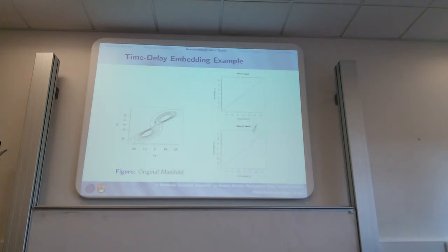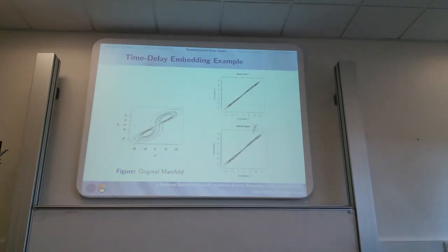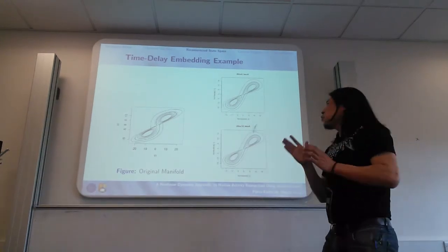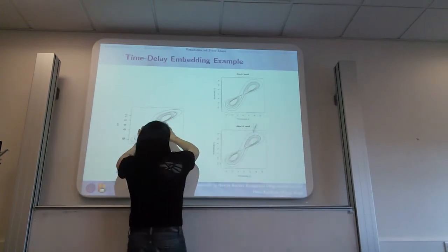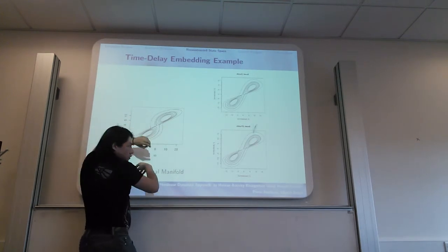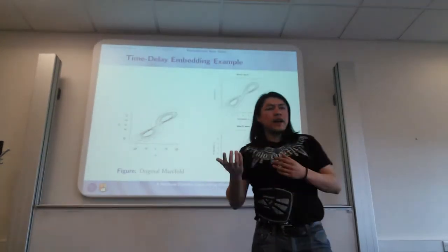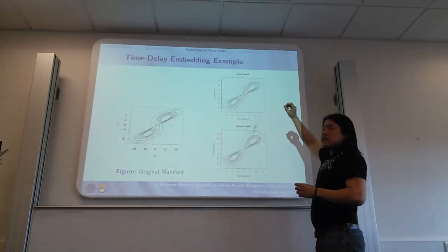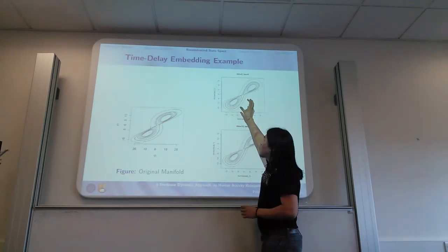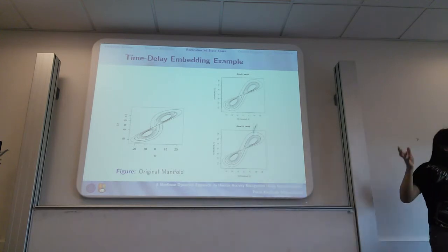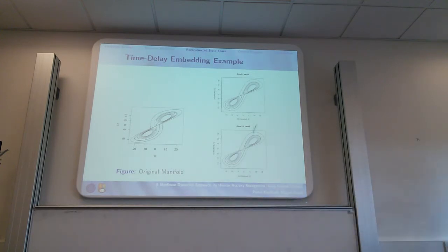Now we are going to see how the values of tau affect the reconstruction. Visually we can see that once we have a value of nine, we have a similar manifold. That is a problem we are dealing with right now: what kind of mathematical tool we are going to use to let us know that this is the proper value for tau and the dimension.